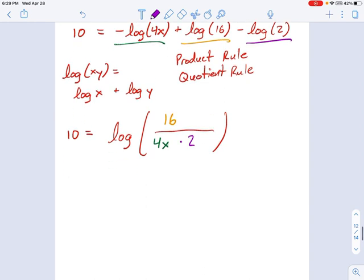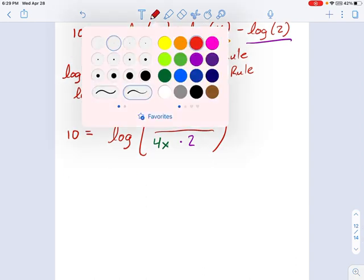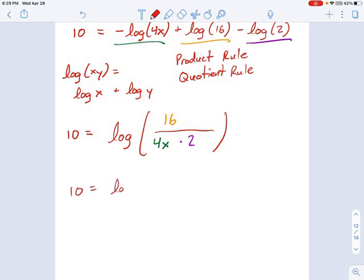And now we can just work all these factors out and figure out what this is. We have 10 equals the logarithm of 16 over 4x times 2 is 8x. So that is 10 equals the logarithm of 16 over 8 is 2. So we have logarithm of 2 over x.